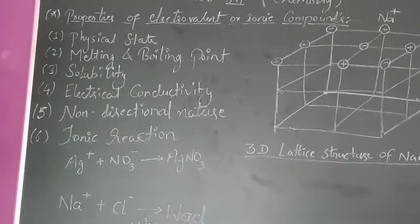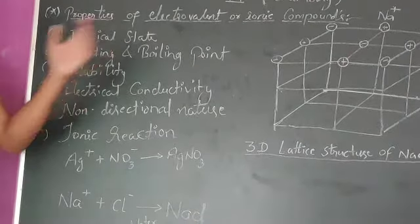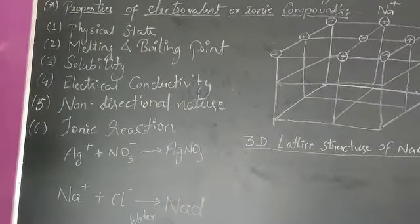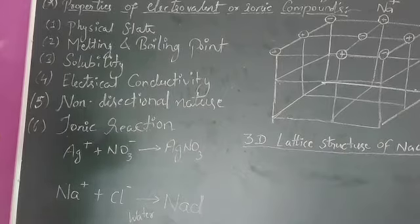Next property is solubility. Ionic compounds are soluble in a fused state. Fused state means that it is a polar solvent like water, where they are easily soluble.